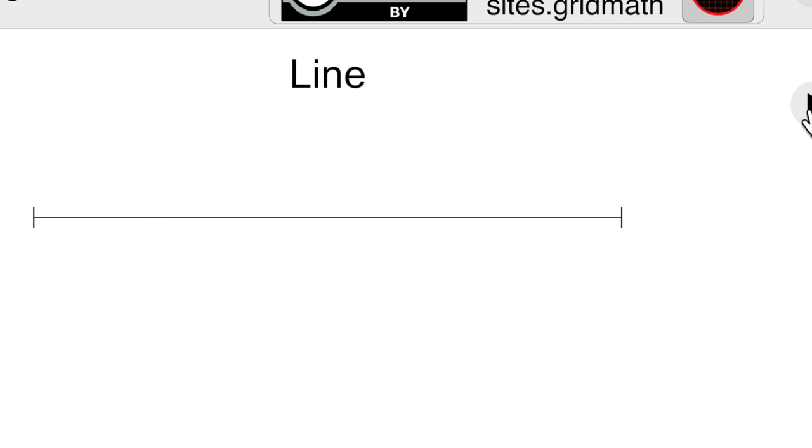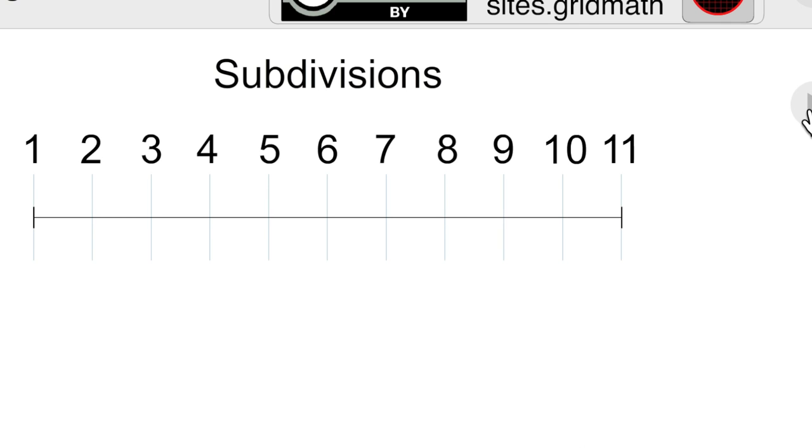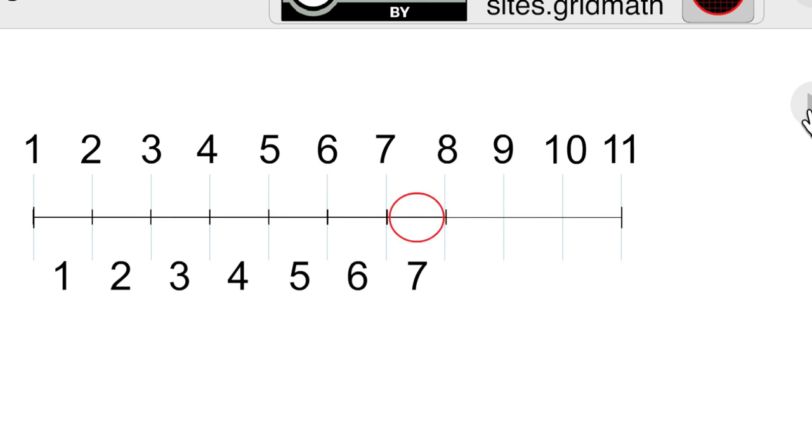Start with 11 equally spaced points along this line, count them off, and in between there are 10 equally spaced intervals.